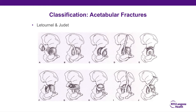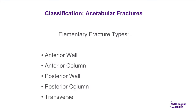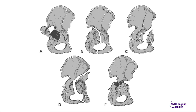Let's talk about the classification of acetabular fractures. Letournel and Judet developed this classification with elementary and associated fracture types — a total of 10 types. The elementary fracture types are: anterior wall, anterior column, posterior wall, posterior column, and transverse fracture. In this schematic, A is the posterior wall, B is the posterior column, C is an anterior wall, D is an anterior column, and E is a transverse acetabular fracture.